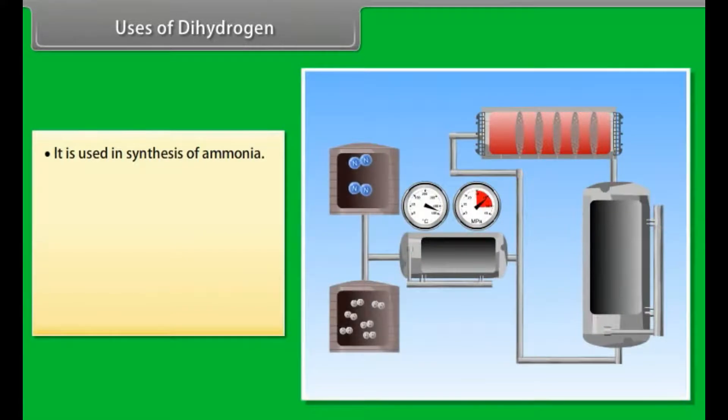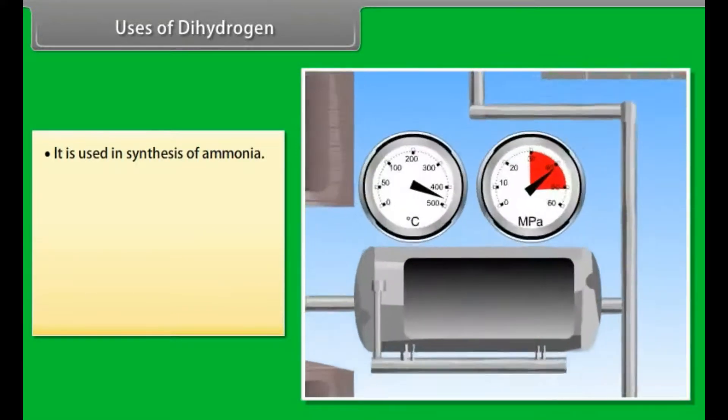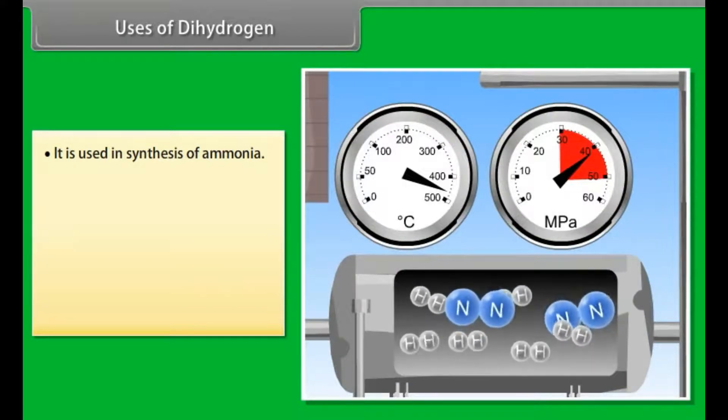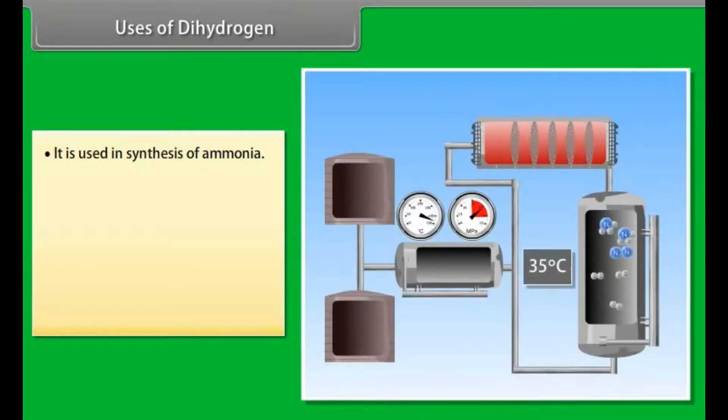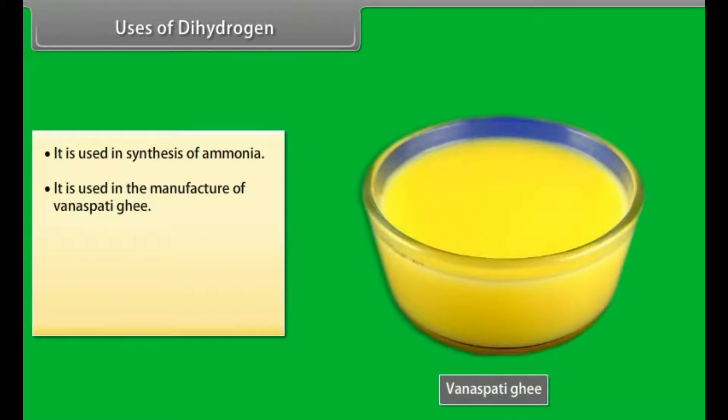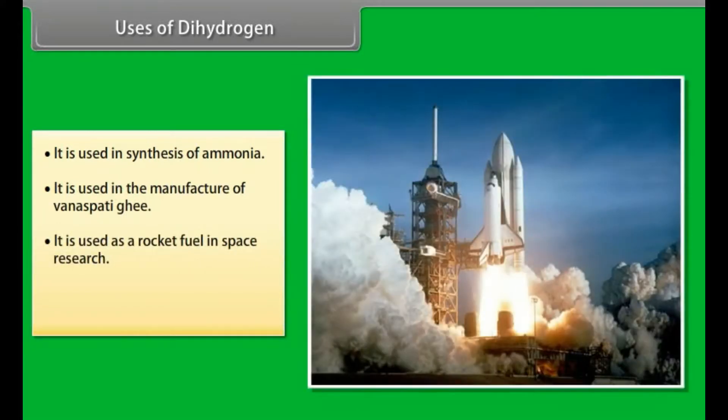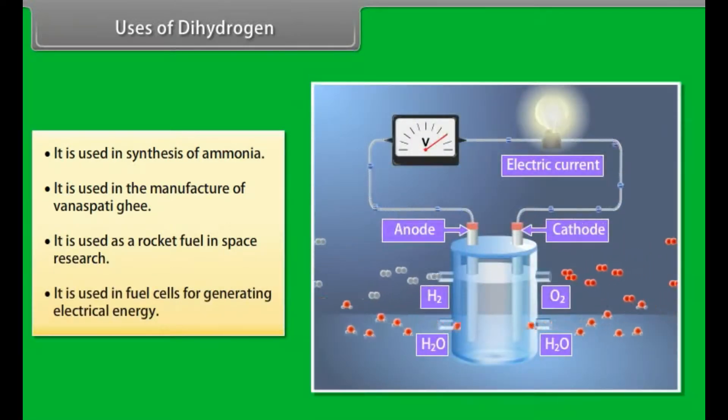Uses of dihydrogen. It is used in synthesis of ammonia. Nitrogen and hydrogen passed to heater, where these are heated up to a certain temperature. After that, they are compressed and then passed to heater, where the reaction takes place. After that, the mixture is passed to waste heat boiler, from which ammonia is cooled and then stored, and nitrogen and hydrogen are recycled. It is used in the manufacture of Vanaspati Ghee. It is used as a rocket fuel in space research. It is used in fuel cells for generating electrical energy.